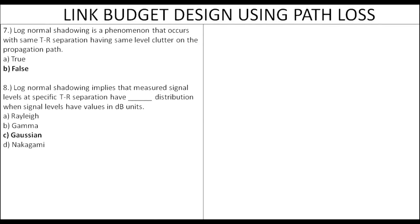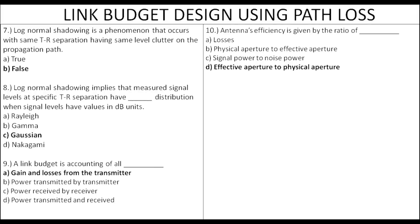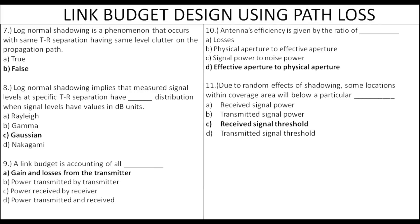For log normal shadowing, we use Gaussian distribution and calculate values in decibels. Link budget is like a general budget — profit and loss. There are link budget gains and losses from the transmitter. The effective aperture to physical aperture ratio is the antenna efficiency.